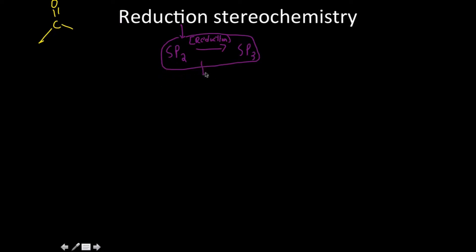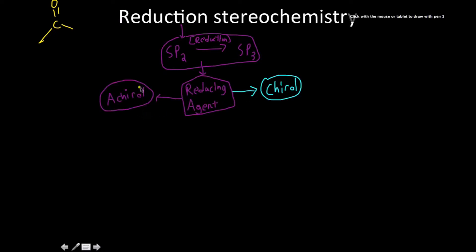The outcome of this all depends on what the structure is of your reducing agent and whether or not that reducing agent is a chiral compound or an achiral compound. So if you have an achiral reducing agent, what you're going to get out of this is either an achiral product or, because it's sp3, a racemic mixture.